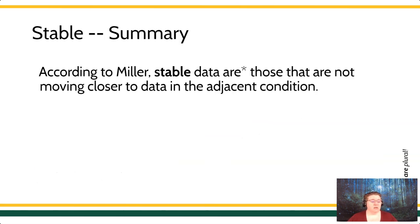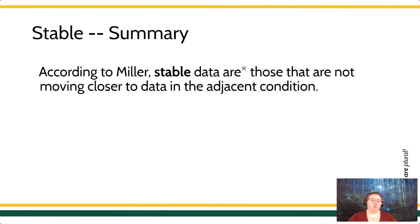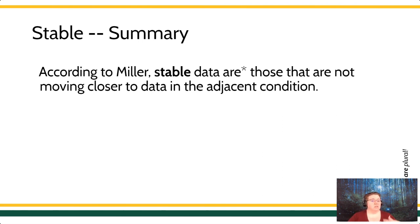To quickly summarize: Miller says that stable data are those that are not moving closer to data in the adjacent condition. We're only ever going to compare conditions to one another one at a time — baseline to treatment, treatment to reversal, or in the multiple baseline, baseline to treatment, baseline to treatment. We only ever compare one to another. And remember that data are plural — data are.